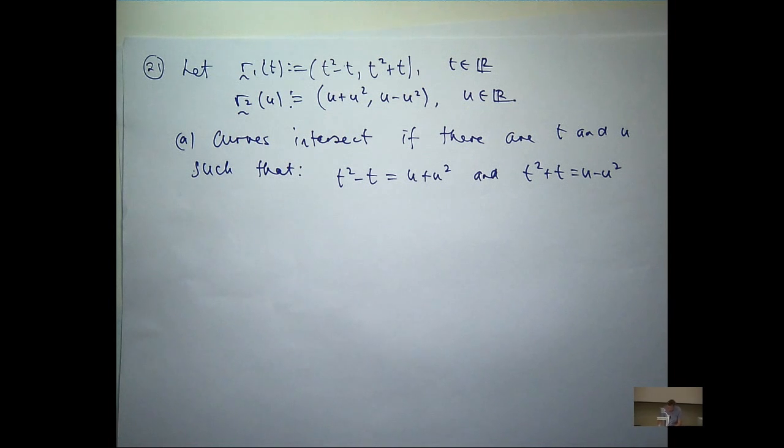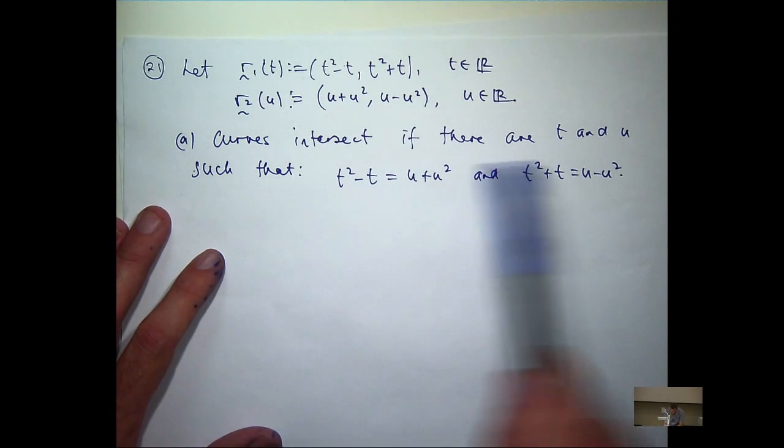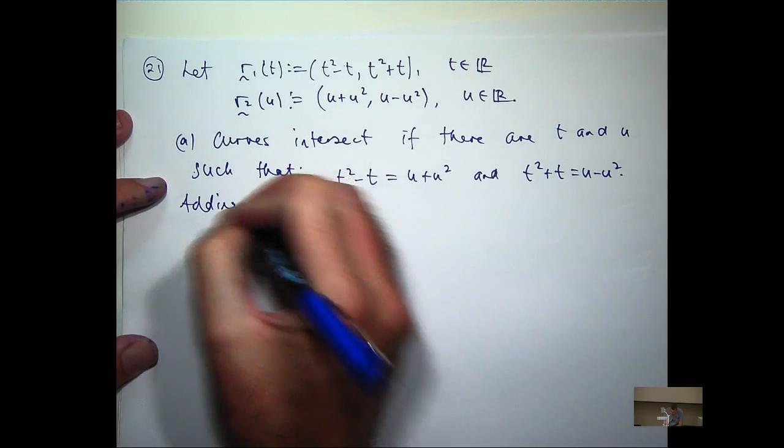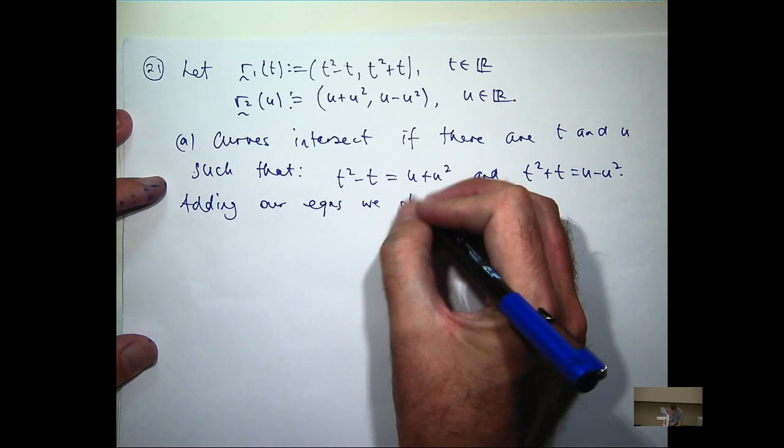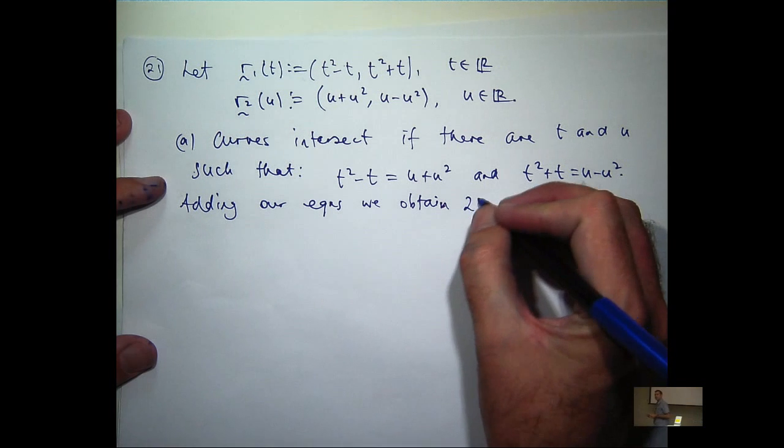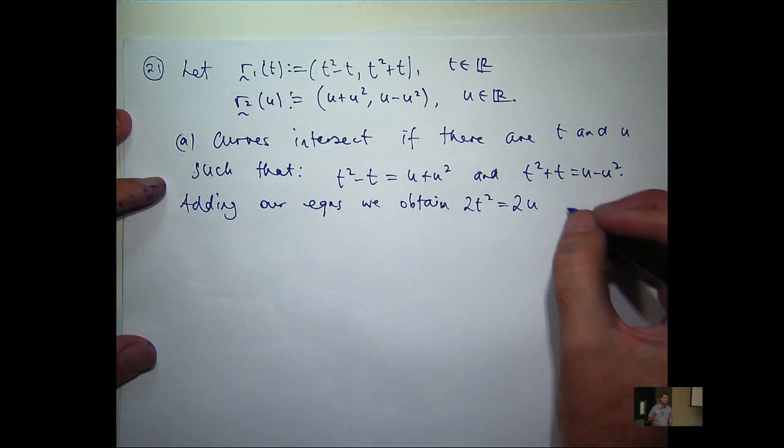So what I'm going to do is add both of these equations together and I'm going to get a bit of cancellation. So on the left hand side I'm going to get 2t squared and on the right hand side I'm going to get 2u. So u is going to be t squared.